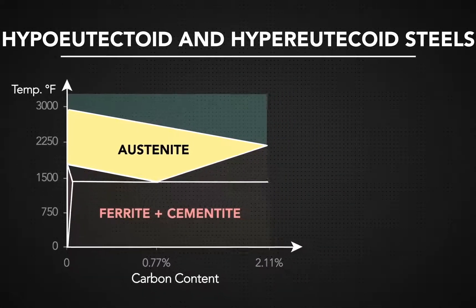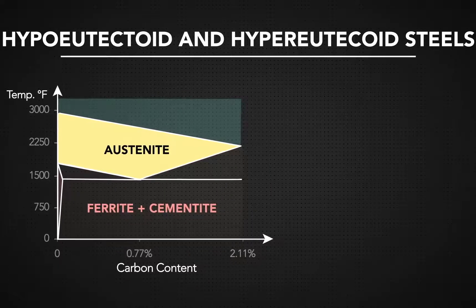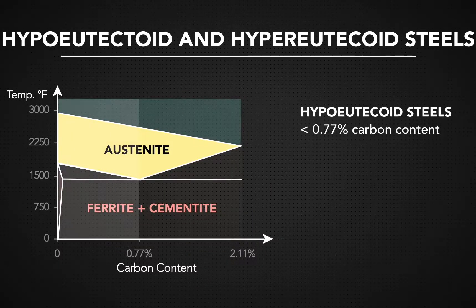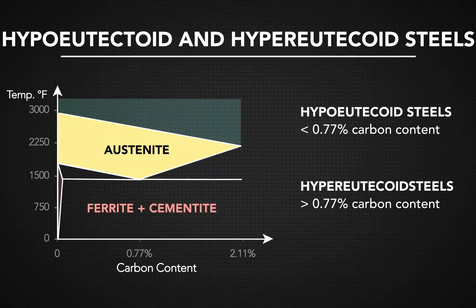Steel is then separated into two separate groups. Hypo-eutectoid steels have a carbon content of under 0.77%, while hyper-eutectoid steels have more than 0.77% carbon content. These two types of steels have different structure and, therefore, different properties.